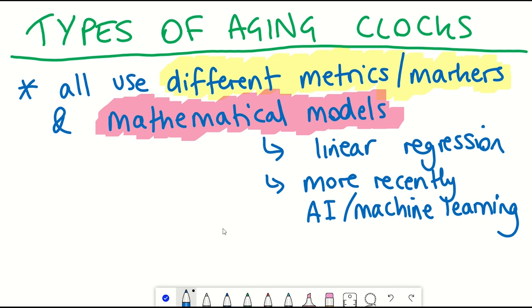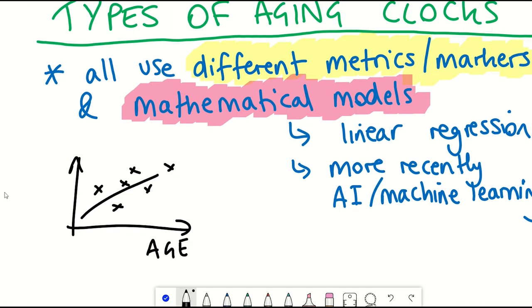And so I don't want to go into too much mathematical detail here but a linear regression is just trying to identify a relationship between variables. So here the biomarkers that are being measured and biological age.